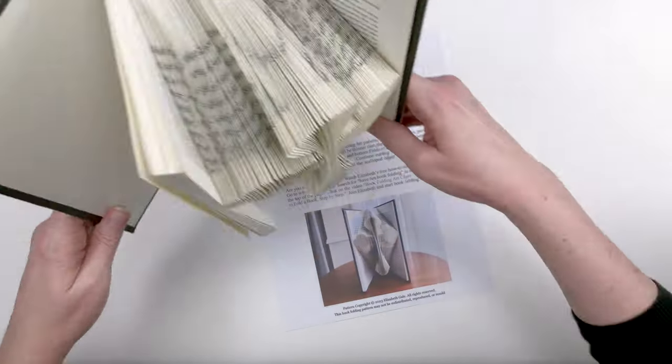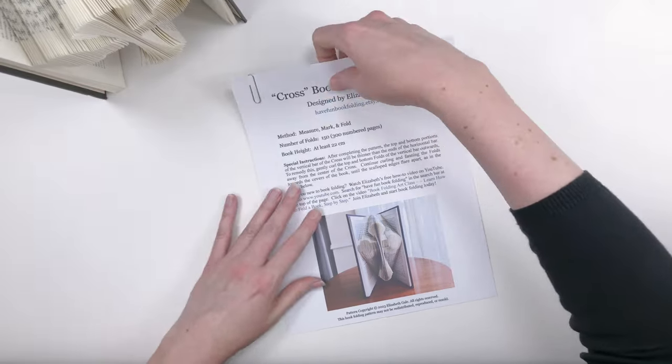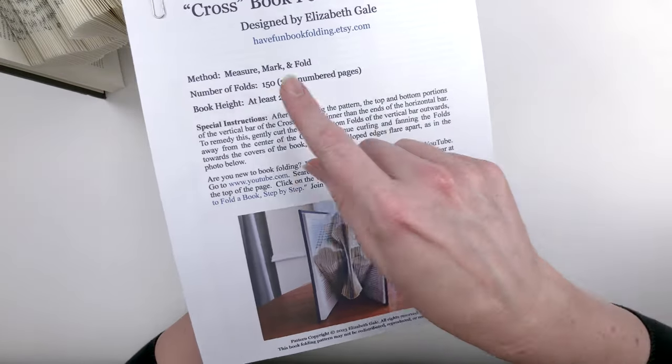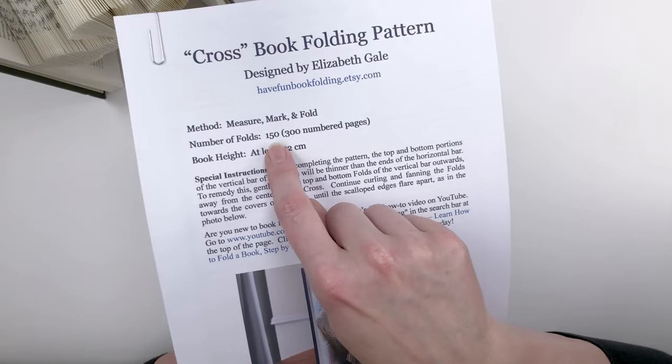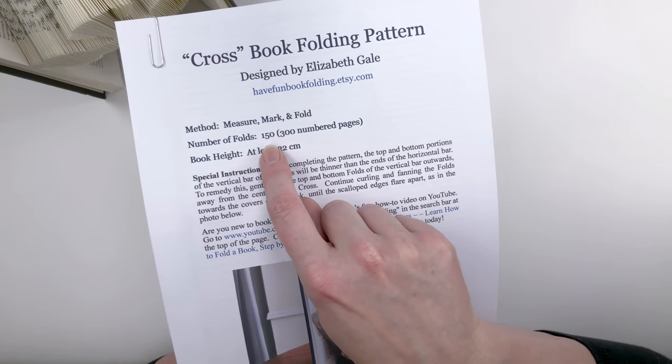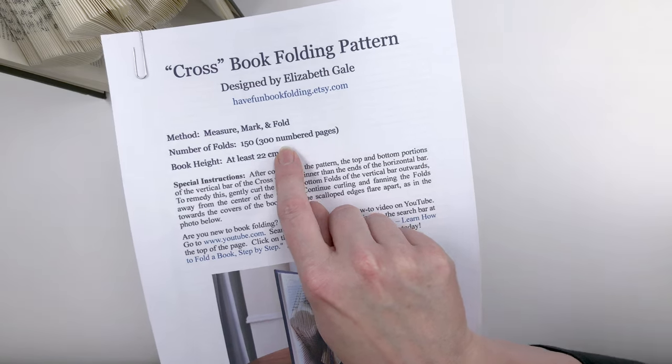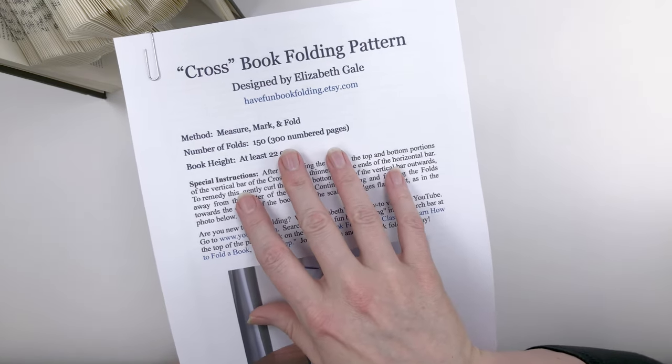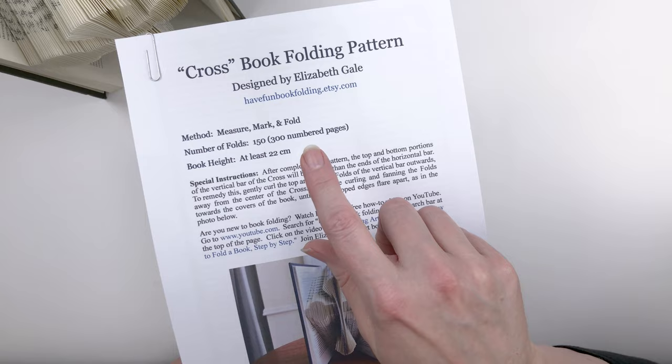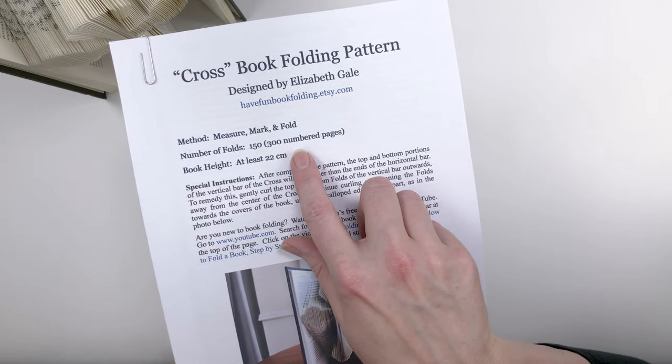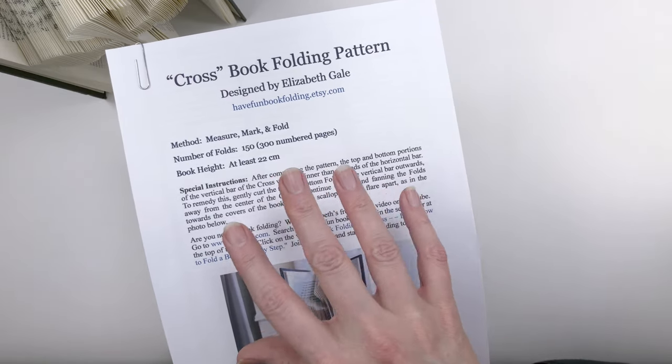So if we look back at our pattern, you can see that's why this number is doubled here. 150 folds or sheets of paper equals 300 numbered pages. So the pattern is telling us we need to find a book that has at least 300 numbered pages in it so that the cross will fit into that book.